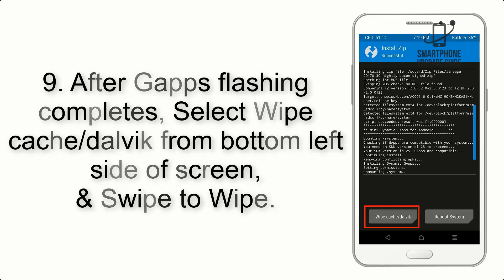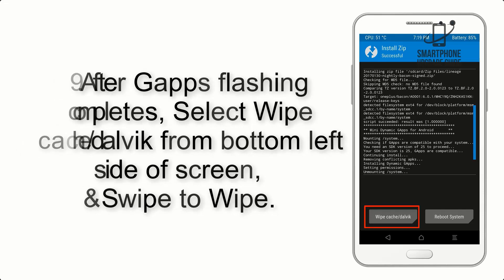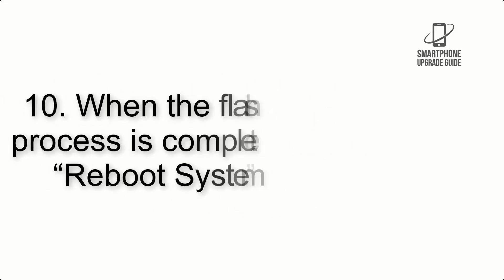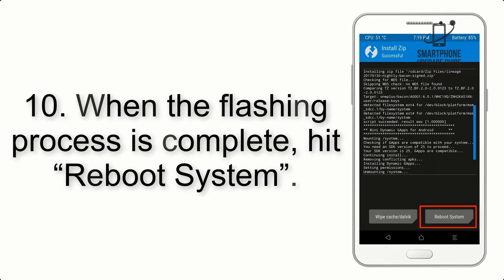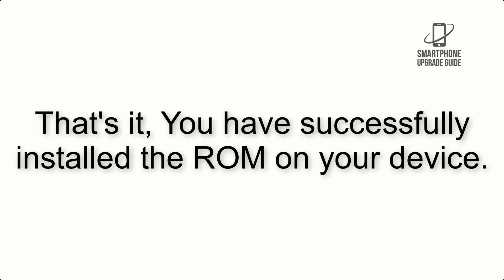Step 9: After GApps flashing completes, select Wipe Cache and Dalvik from the bottom left side of the screen and swipe to wipe. Step 10: When the flashing process is complete, hit Reboot System. That's it — you have successfully installed the ROM on your device.